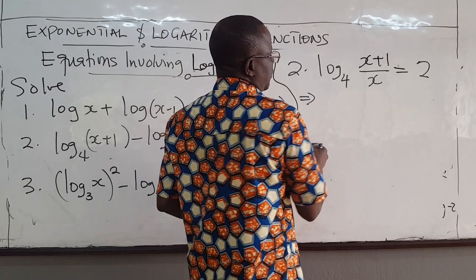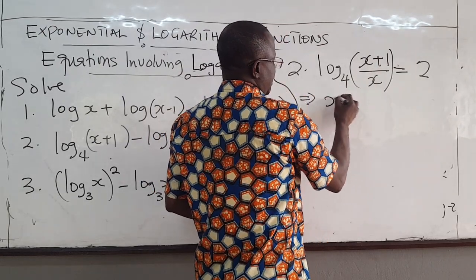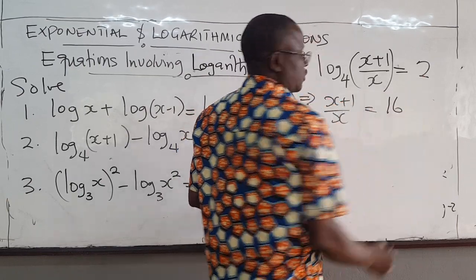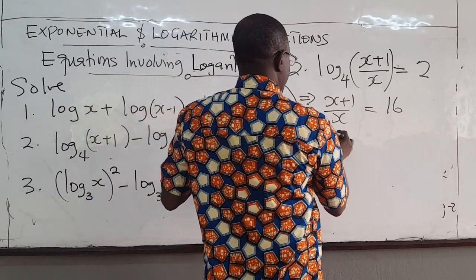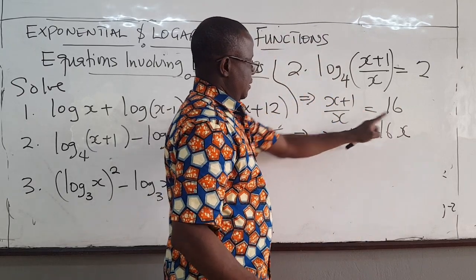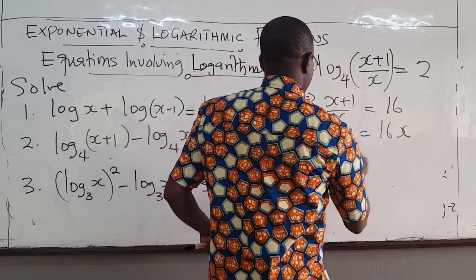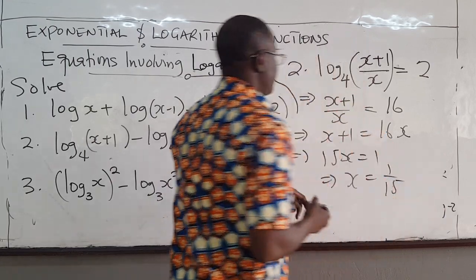This means x plus 1 over x equals 4 raised to the power 2, which is 16. So x plus 1 equals 16x. 16x minus x is 15x, so 15x equals 1, which implies that x equals 1 over 15.